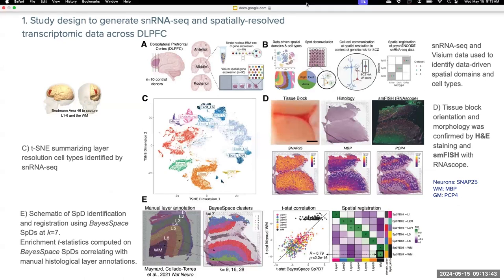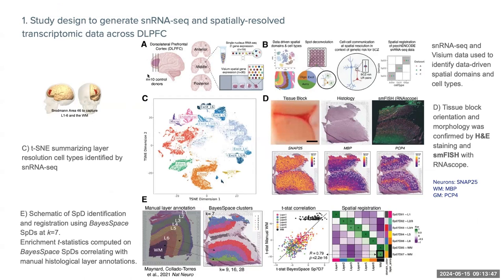I will start presenting the first image, which illustrates the study design to generate the single-nucleus and the spatial resolved transcriptomics data across the human DLPFC. These samples were taken from Brodmann area 46, set to capture layers one through six including the white matter. The study contains a total of 10 samples from 10 donors, including anterior, posterior, and axis regions.